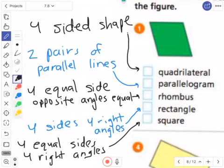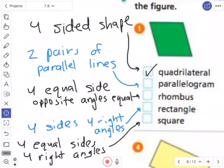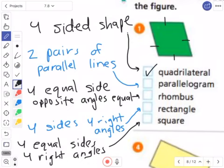So quadrilateral, it's a four-sided shape. Well, yeah, it's a four-sided shape because I can count it. I can even just double check. One, two, three, four. Yep.